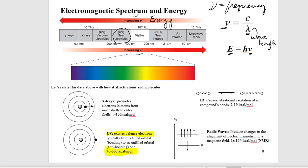Moving to X-rays — this is one to be concerned about. X-rays promote electrons in atoms from inner shells to outer shells, such as from 1s to 4s, at 300 kilocalories per mole or higher. That's why you wear a lead apron when getting an X-ray. Above X-rays, gamma rays are so high in energy they cause rampant damaging processes in the body.